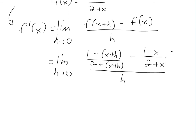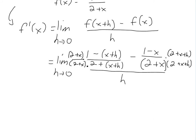We can multiply the right side by 2 plus x plus h, which is this part, and then the left side by 2 plus x. So we'll have a common denominator — multiplying this side by 2 plus x plus h and the other by 2 plus x — so that we can add them up. This equals the limit as h approaches 0.